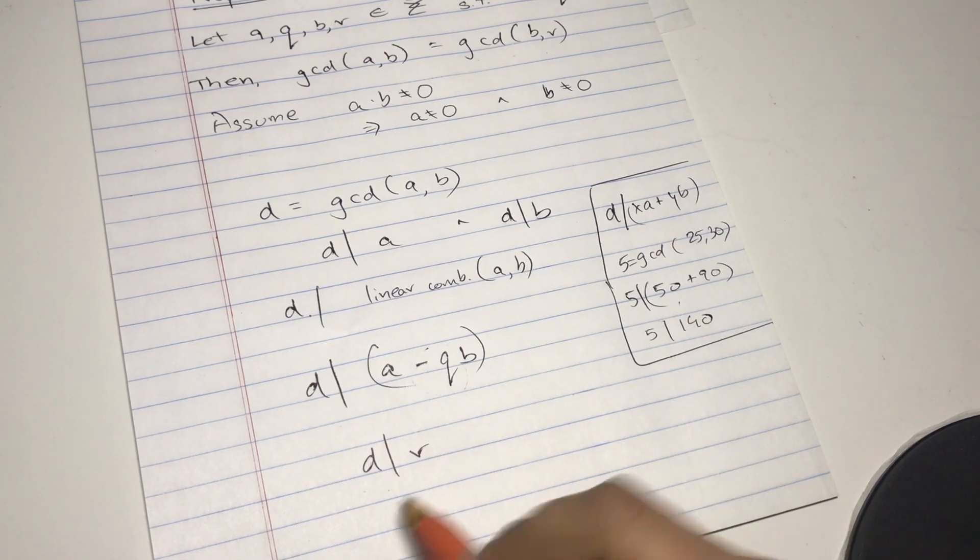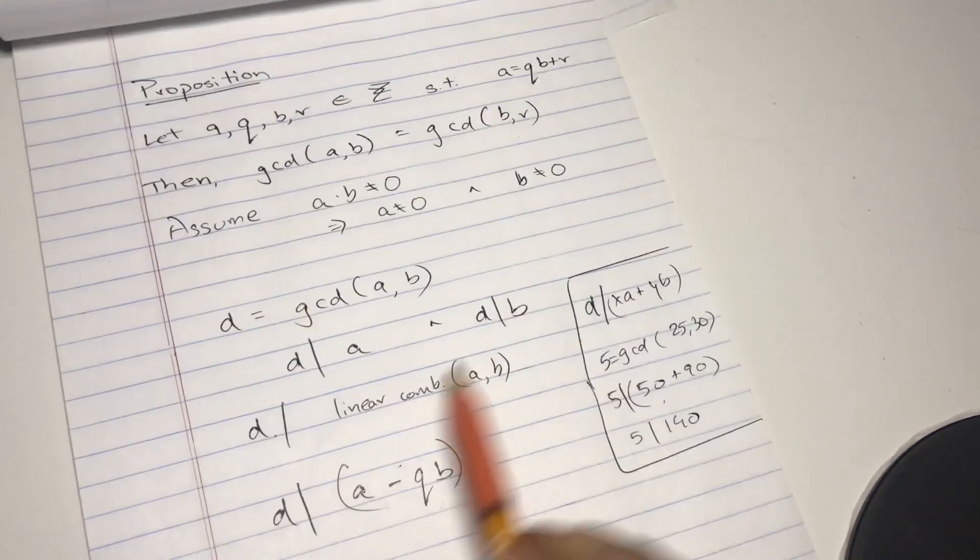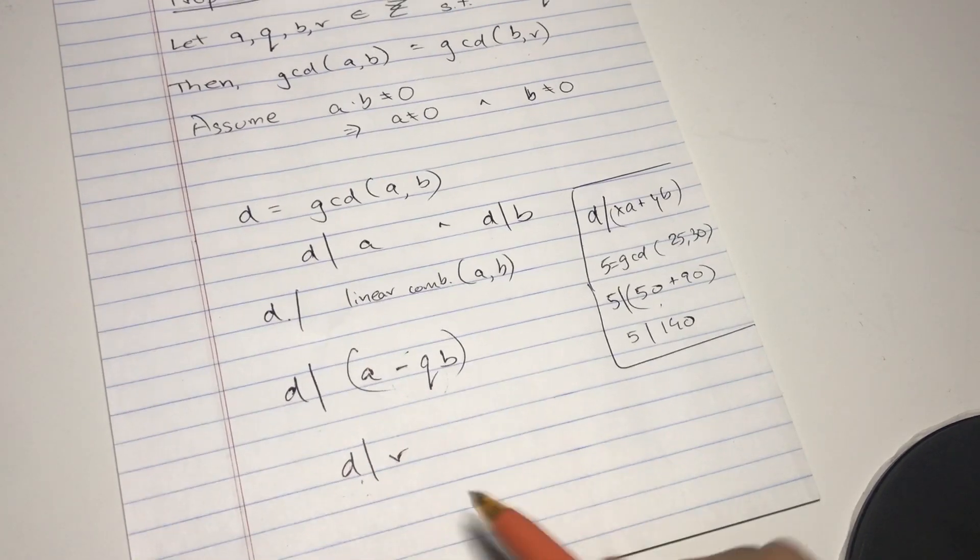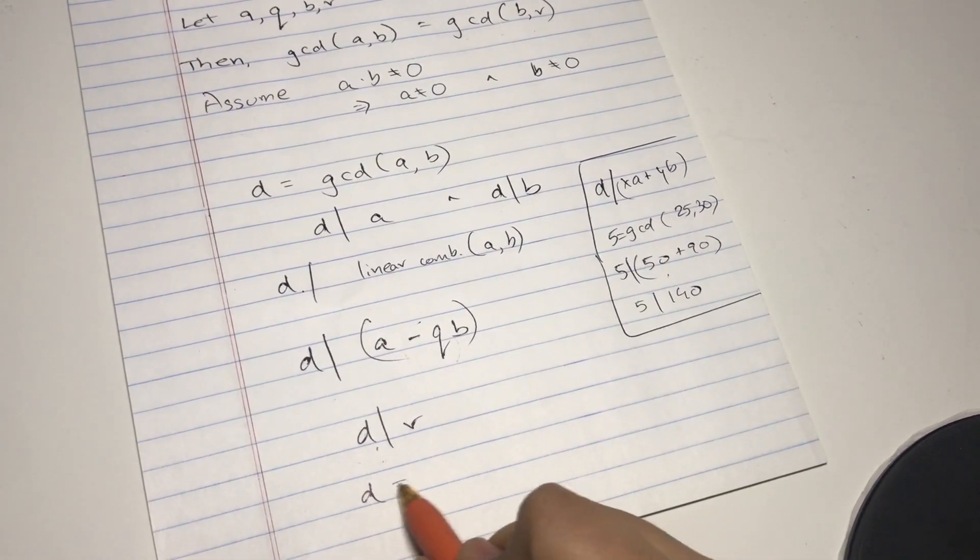So we have over here, d divides r, and then we know d divides b. So this just means there exists d that divides r and b, but we don't know that d is the greatest common divisor of b and r.